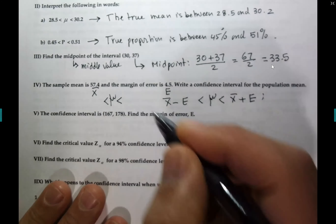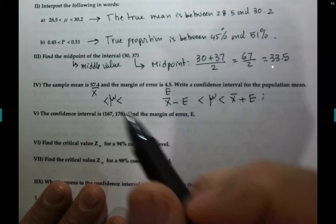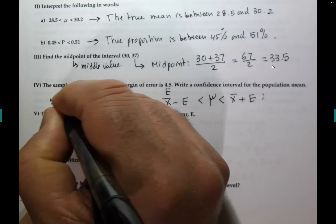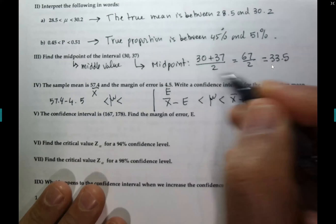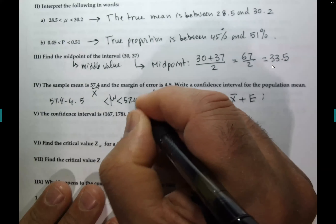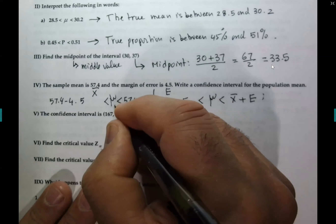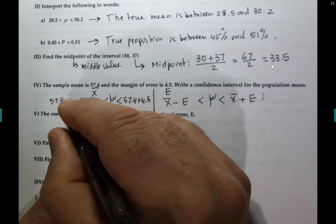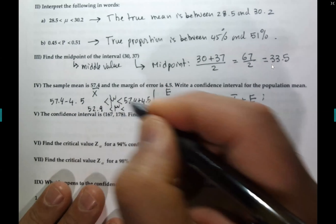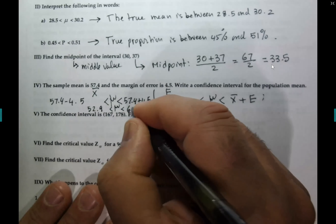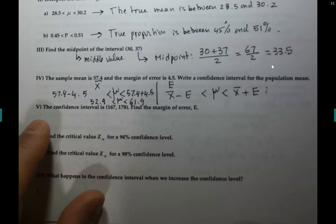You already have x̄ and e. You subtract first: 57.4 − 4.5 = 52.9, and you add: 57.4 + 4.5 = 61.9. So the mean is between 52.9 and 61.1. You're done.